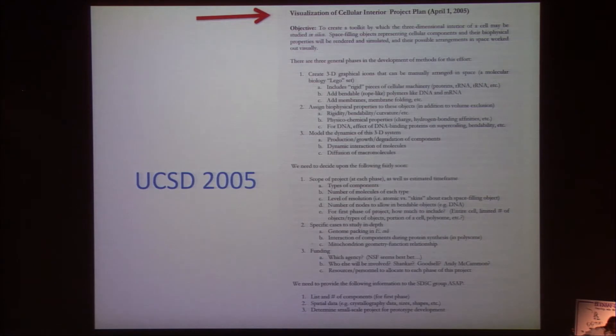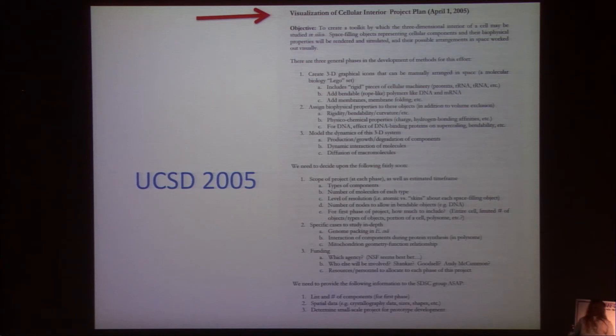In April of 2005, we came over to the computer center here and talked about building a three-dimensional rendering of the Goodsell cell drawings, where you would actually be able to calculate biophysical properties, flows, fluxes, and so forth. I guess we were a little bit ahead of our time, as evidenced by this meeting and the statement of all the difficulties that this entails.